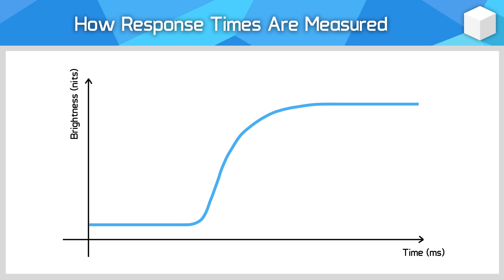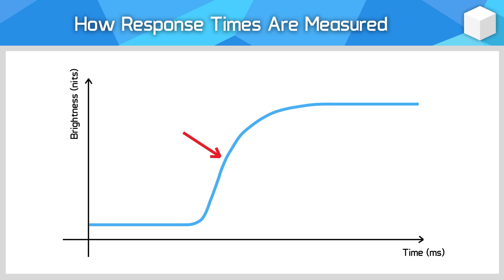Along the x-axis we have time in milliseconds, and along the y-axis we have brightness in nits. Our tool actually produces a voltage readout, but this can be mapped directly to nits thanks to how the sensor operates. What we're looking at here is the monitor's actual response when asked to change from showing a full black image to full white. Down here in the lower steady state period we have the monitor showing black, and up here we have the monitor showing white at a higher brightness level.